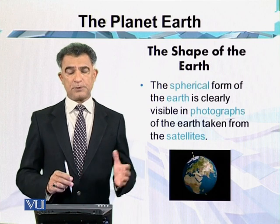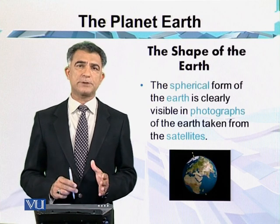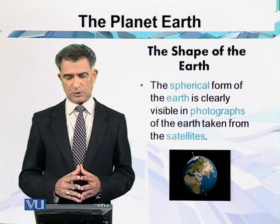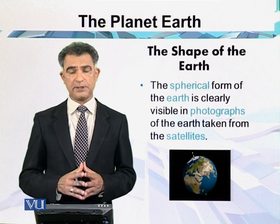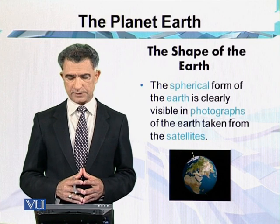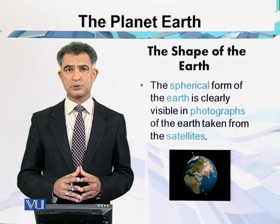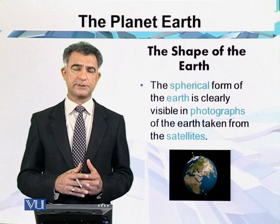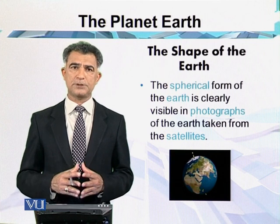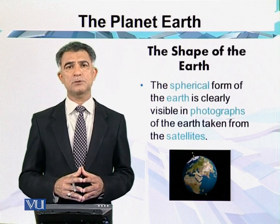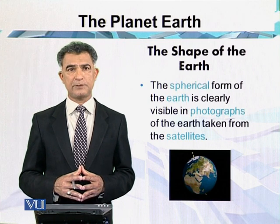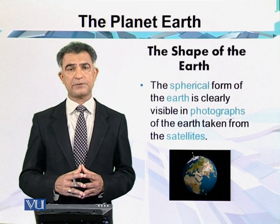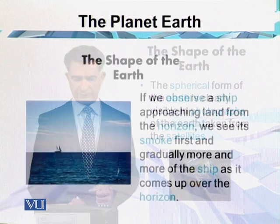How do we know the shape of the planet is rounded? The spherical form of the earth is clearly visible in photographs of the earth taken from satellites. The satellites we have sent into space, and when we photographed the earth from the moon, the land appears in a rounded shape. So that is the spherical shape — this is one of the evidences.